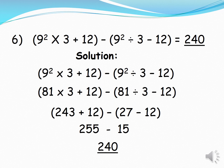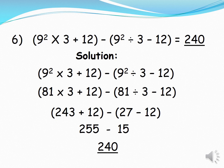Example 6: (9²×3+12)−(9²÷3−12)=240. Solution: 9²=81. 81×3=243, then 243+12=255. 81÷3=27, then 27−12=15. Then 255−15=240.